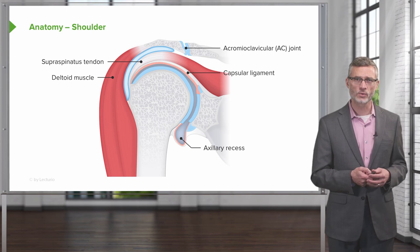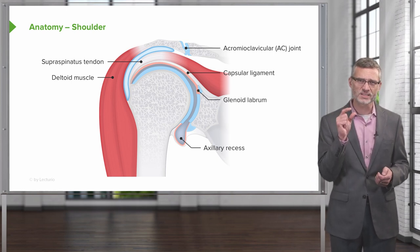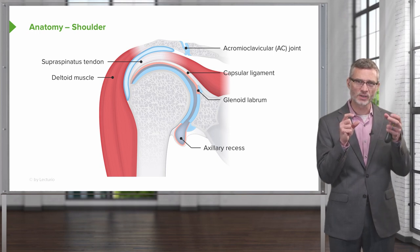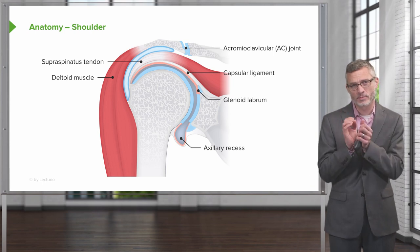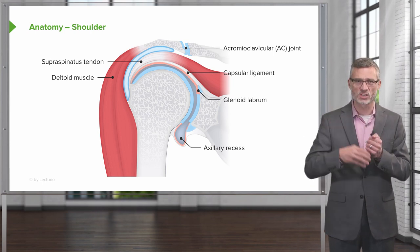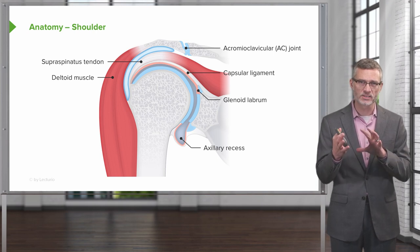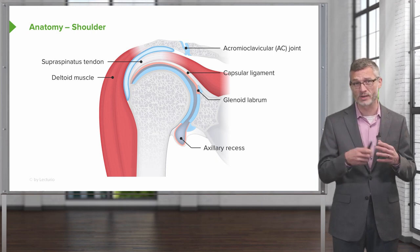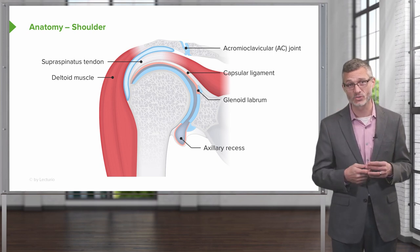Also take note of the glenoid labrum. The glenoid fossa, which is the bony part of your scapula, is where the humeral head articulates with the rest of your body. The glenoid labrum provides a little bit of extra articulation — it's a cartilaginous structure that provides more support on an otherwise fairly unsupported, golf ball on golf tee kind of joint.